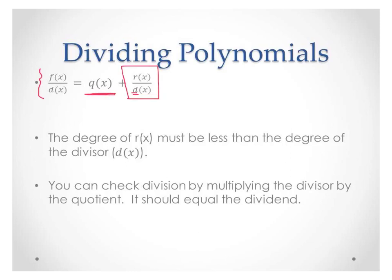That's when you get to where you can't divide anymore. So if your remainder has a degree of 2 and your divisor has a degree of 4, you're done, because you can't divide x to the 4th into an x squared. And remember, just like when you first started long division many years ago, you can always check your division by multiplying.